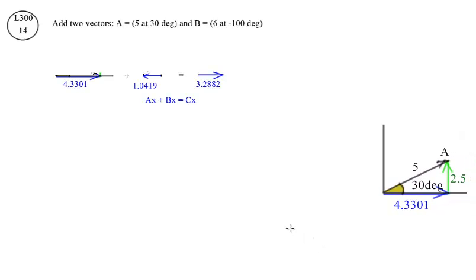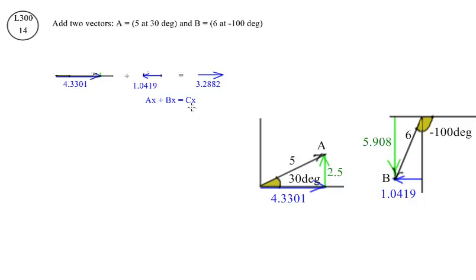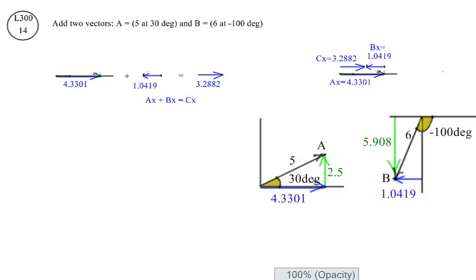Adding the horizontal components first: AX plus BX equals CX. It doesn't look like 4.33 plus 1.04 equals 3.28, but it is because these are vectors. The numbers actually subtract, and the direction of the resultant is the same direction as the larger component. We can visualize this better if we add the vectors head to tail. Put the head of the A vector at the tail of the B vector, and then the resultant vector is from the tail of A to the head of B.